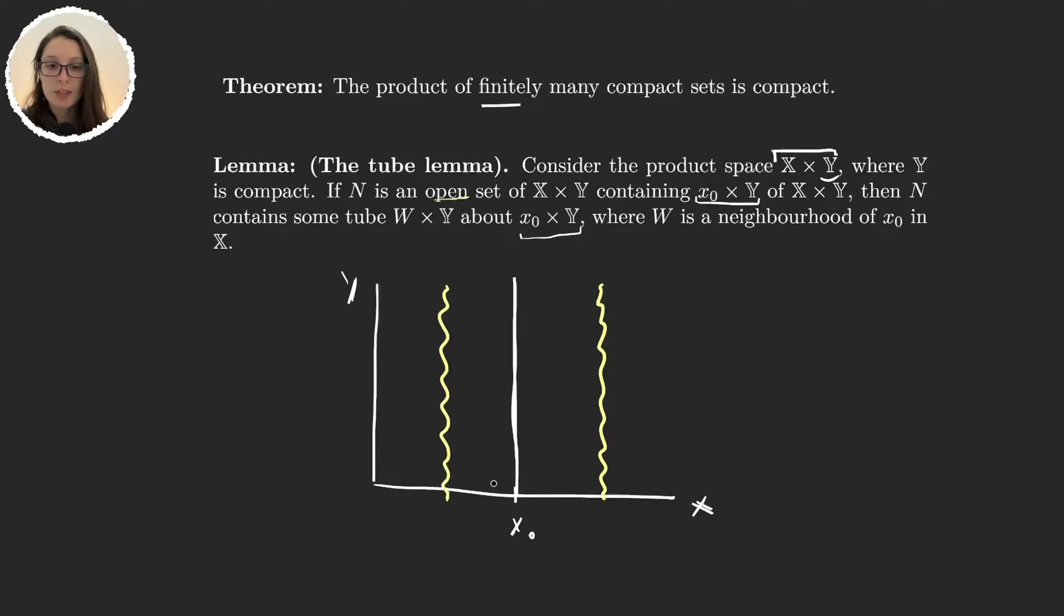And what we will prove is that there exists a set W neighborhood of x₀ in X such that N contains the tube of W times Y. Before proving the lemma let me delete W because we are going to need a drawing.